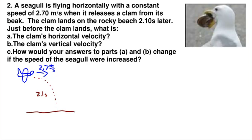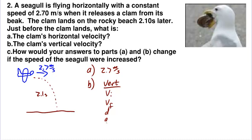Just before the clam lands, part A asks: what is its horizontal velocity? Horizontally, the clam must be going the same speed as the seagull — 2.7 meters per second — since there is no horizontal acceleration all the way until it hits the ground. To find its vertical velocity right before it hits the ground, we set up a vertical table: Vi is zero (vertically, not at all when first released), D is unknown, A is 9.81 meters per second squared, and T is 2.1 seconds.